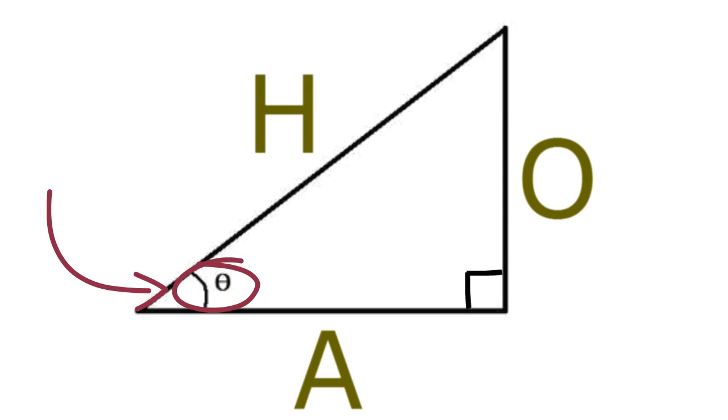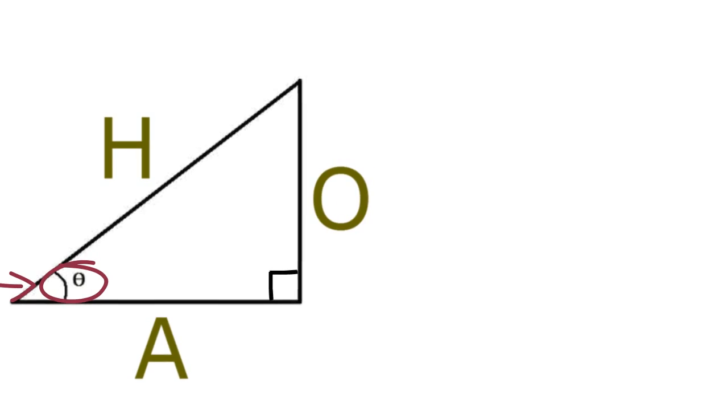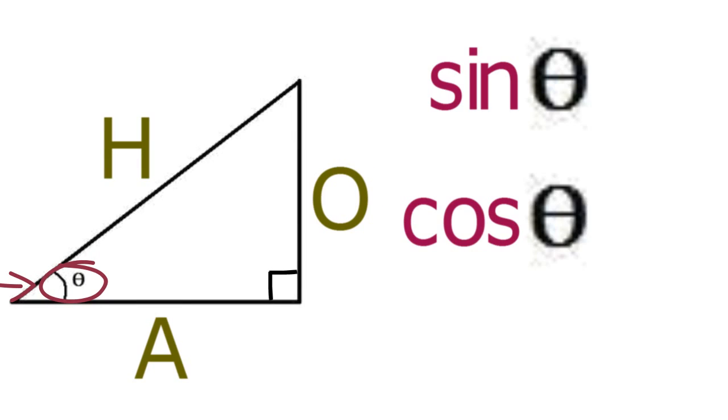The hypotenuse is always the longest side of the triangle. From this foundation, we build the three basic trig ratios as functions of theta.